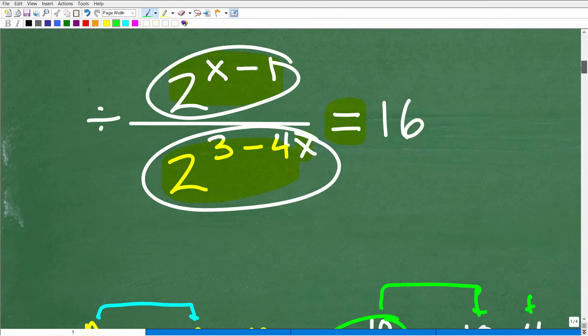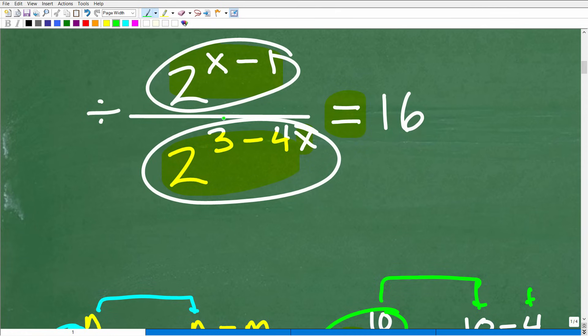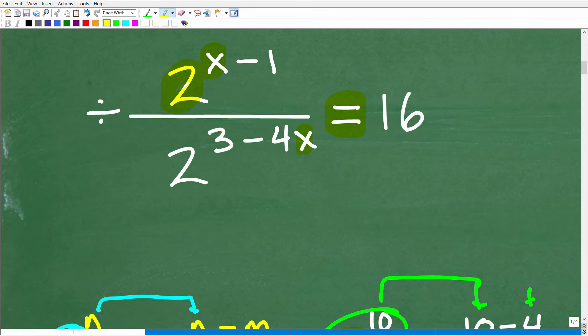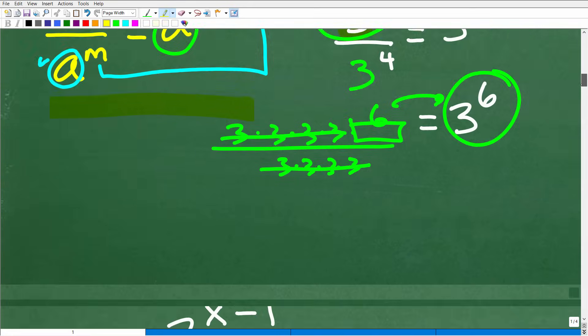So we're going to want to apply this rule here. Why? Because notice I have the same bases. I have two and two. That's like a and a or three and three. So I can clean this expression up here, this division of power. So we're going to have to take that step and let's go ahead and do this right now.